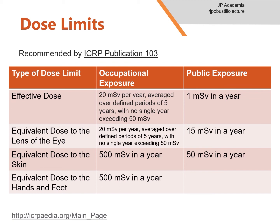Let us review the dose limits. For effective dose under occupational exposure, the limit is 20 millisieverts per year, averaged over a defined period of 5 years, with no single year exceeding 50 millisieverts. For public exposure, the effective dose limit is 1 millisievert per year. Note that for occupational exposure, if the worker declares pregnancy, the dose to the embryo or fetus should not exceed approximately 1 millisievert during the remainder of the pregnancy.